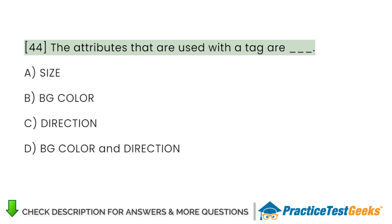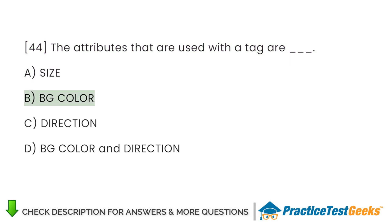Which attributes are used with a marquee tag? A. Size. B. BG Color. C. Direction. D. BG Color and Direction.